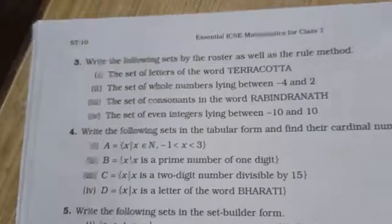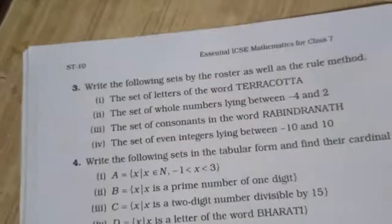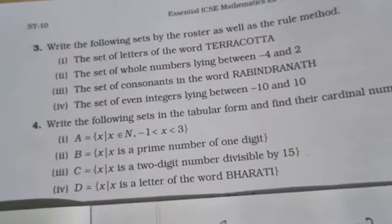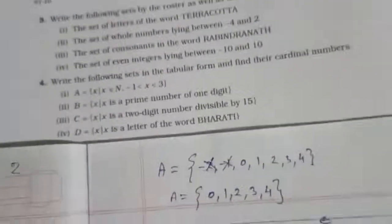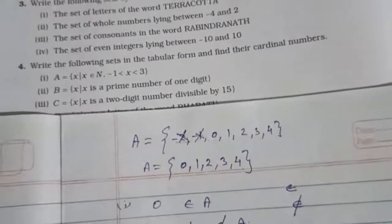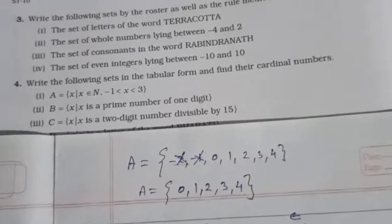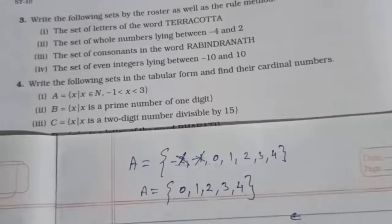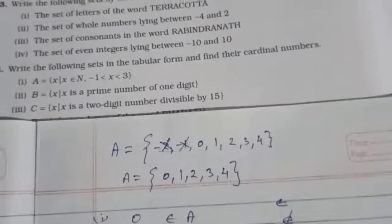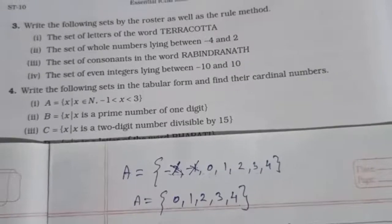Now the next question: write the following sets in roster form as well as by the rule method. The set of letters of the word 'Tericota.' In the previous video we have already seen how to write in roster and in rule method. Roster means the elements will be visible, and in set-builder (rule) method the elements are described by a rule.